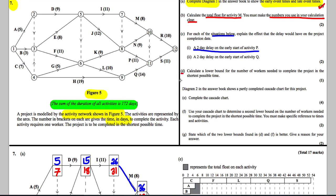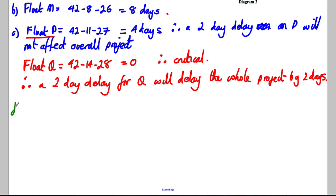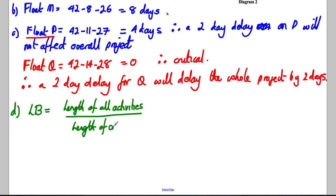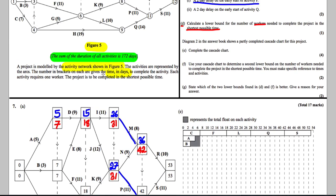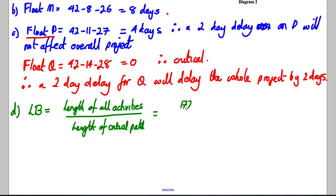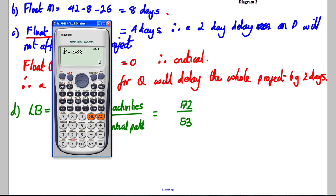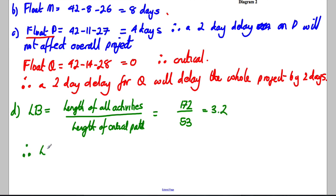For part D, calculate a lower bound for the number of workers needed to complete the project in the shortest possible time. The lower bound equals the sum of all activity durations divided by the length of the critical path. The sum is 172 days, and the critical path is 53. So 172 divided by 53 = 3.2, therefore the lower bound is 4 workers, because you can't have 3.2 workers so you round up.